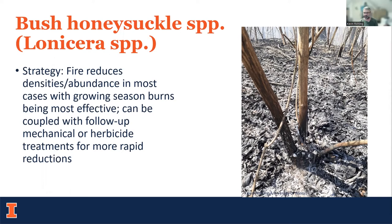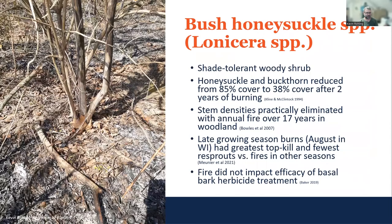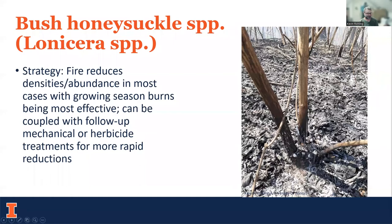The fuels on the ground can play a significant role. You can see in this example where leaf litter was not continuous up to the base of an individual honeysuckle — it didn't really burn at the base of that stem, so that one's probably going to be fine. Another individual, on the other hand, had quite a bit of leaf litter and heat at the base and put a lot of heat on the root collar — that one would not surprise me if it was actually killed rather than just top-killed.